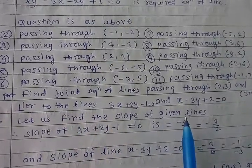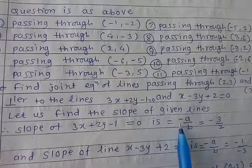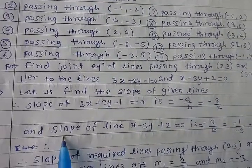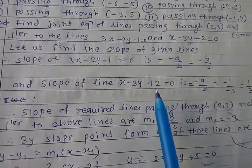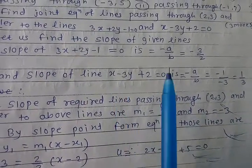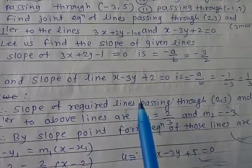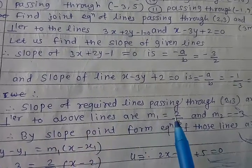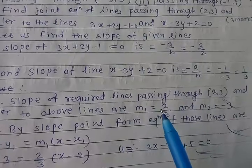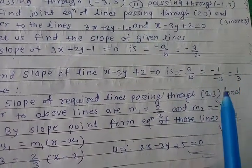First, find the slope of the given lines. Slope of the first line 3x + 2y − 1 = 0 is −a/b = −3/2. Slope of the second line x − 3y + 2 = 0 is −a/b = −1/(−3) = 1/3. Since the required lines are perpendicular to these, their slopes are m1 = 2/3 (reciprocal with sign change) and m2 = −3 (reciprocal with sign change).